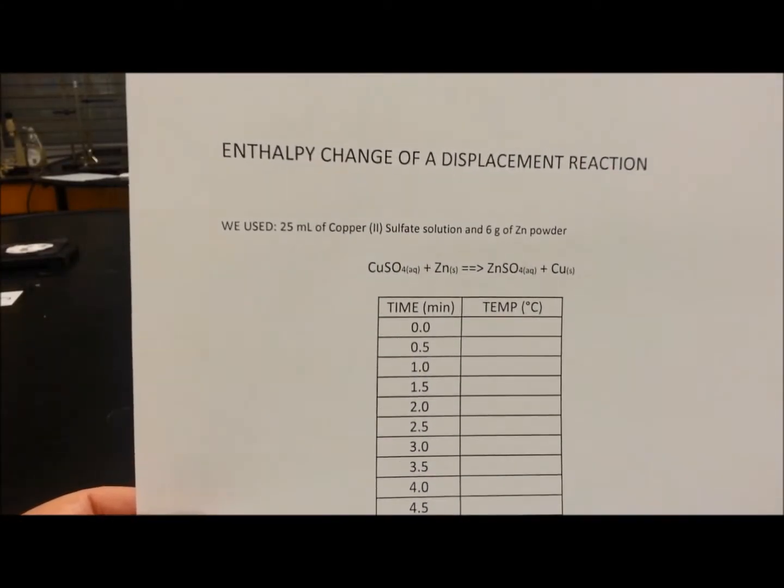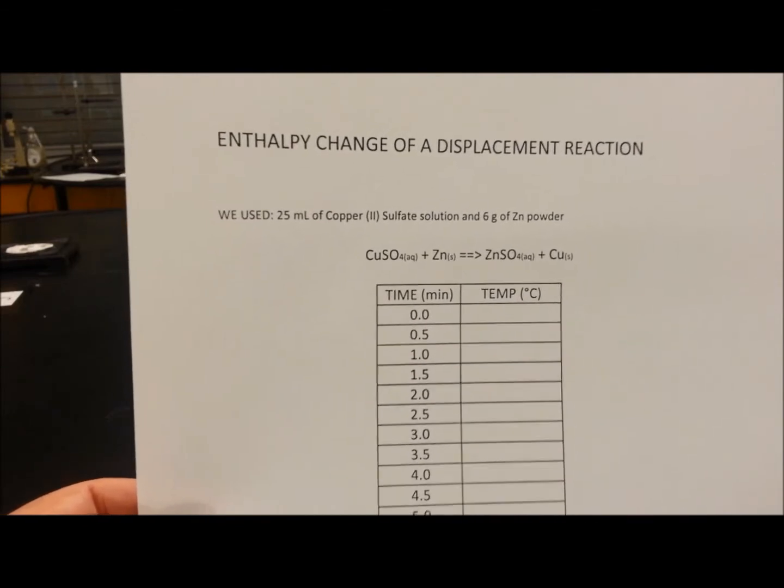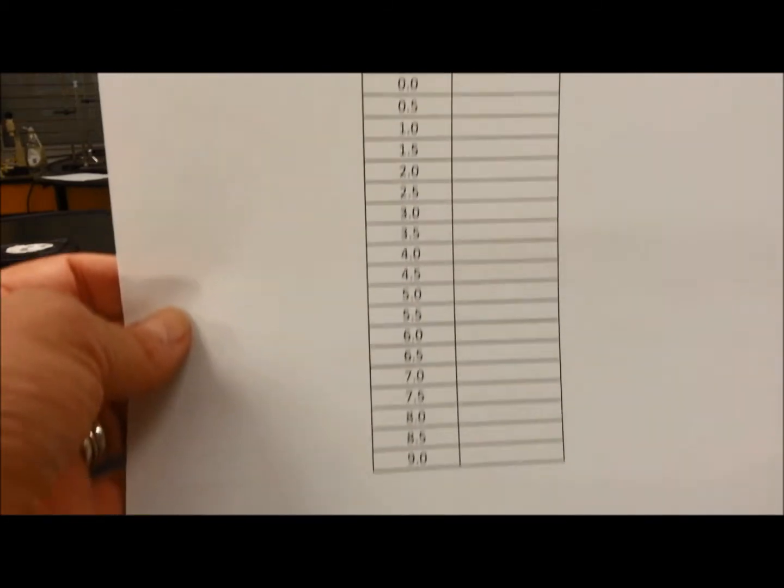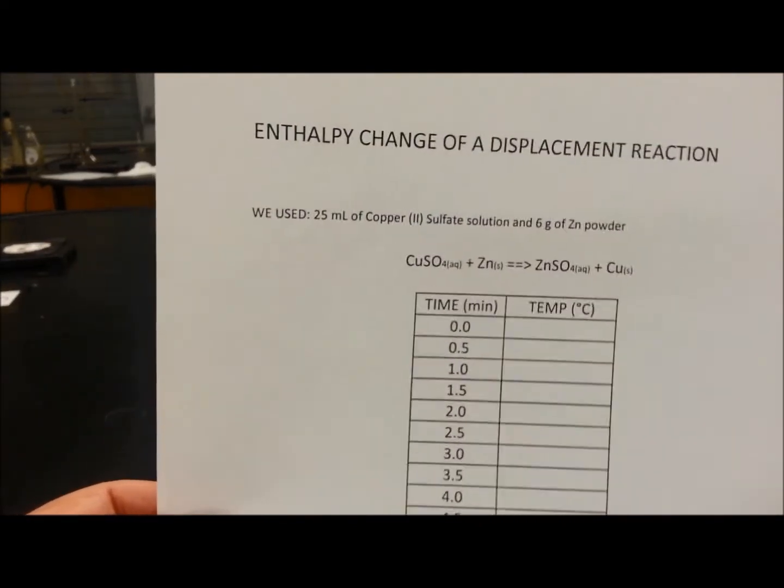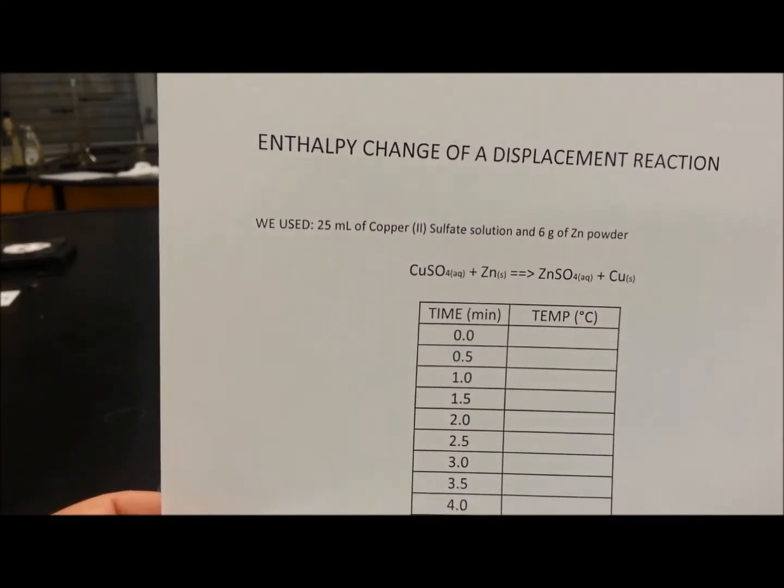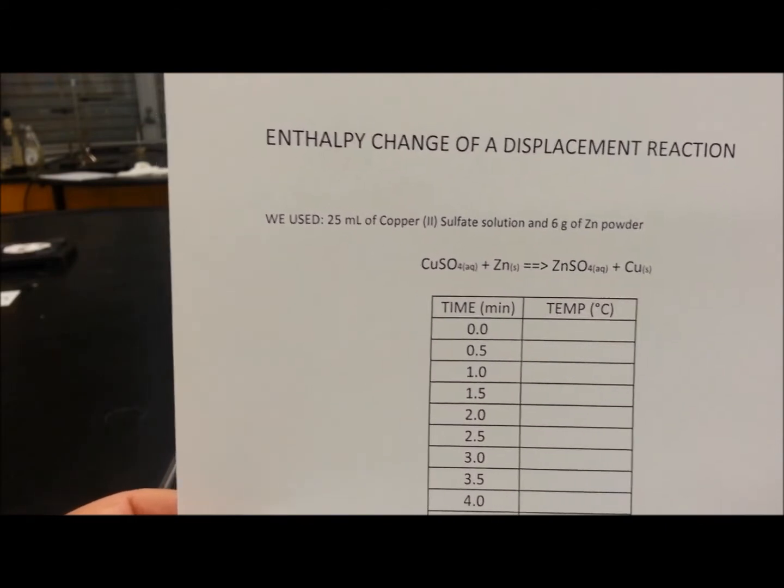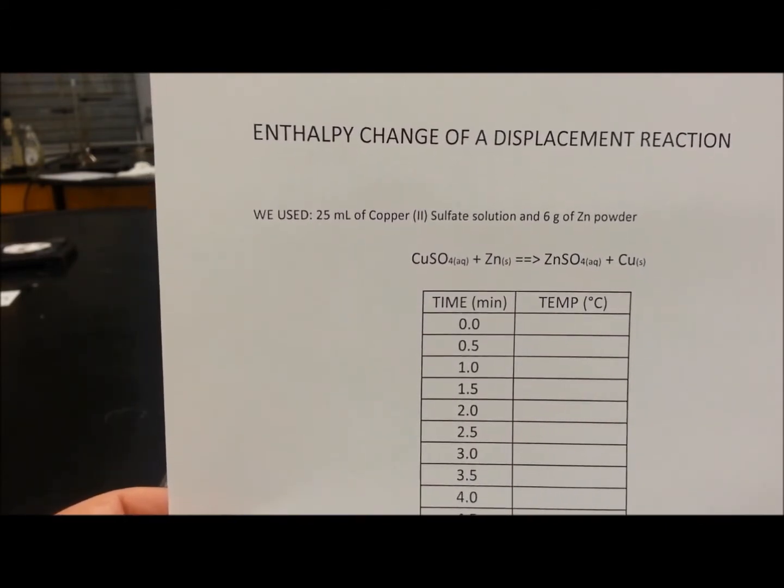In this case, I already prepared the data table that I'm going to fill out. We're going to fill out up to nine minutes. We are using 25 milliliters of copper sulfate solution, one molar, and six grams of zinc powder.